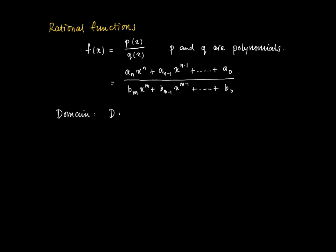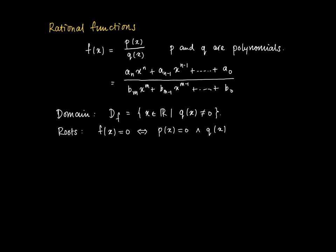The denominator Q is a polynomial of degree M. The domain of this function is basically anything that can be substituted for X which does not cause problems. We only get problems when the denominator equals zero, so the domain is all X in R for which Q of X is not equal to zero.